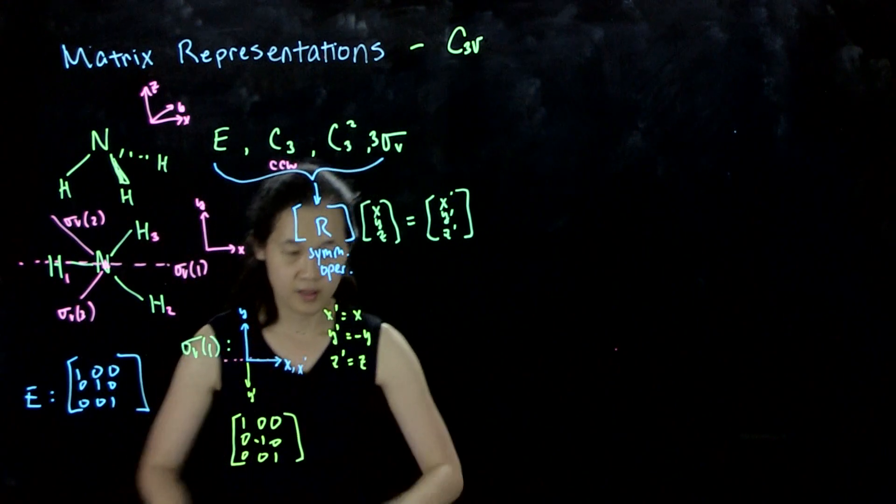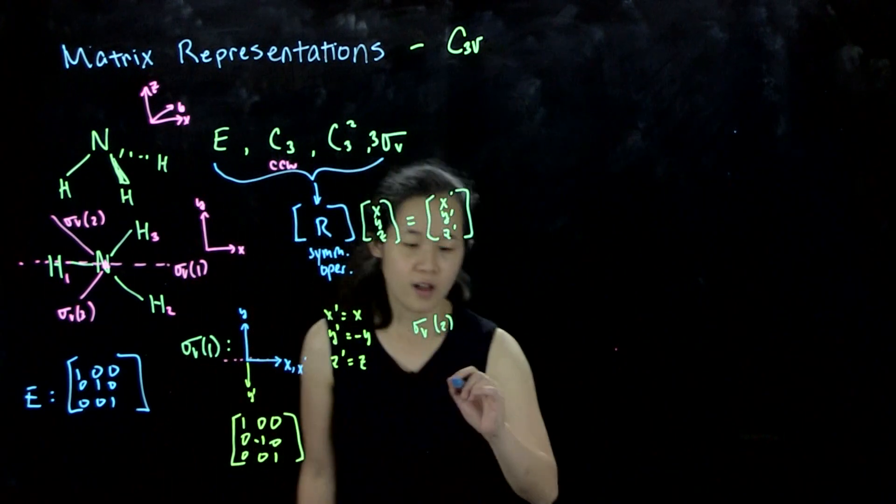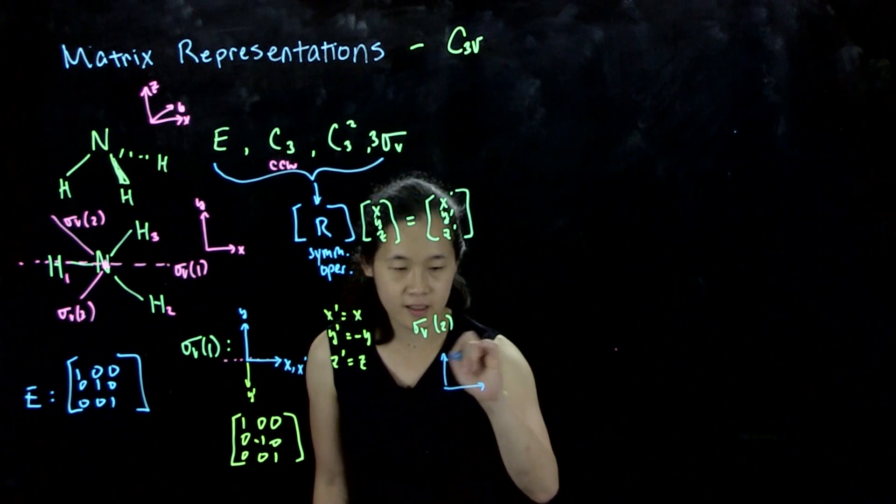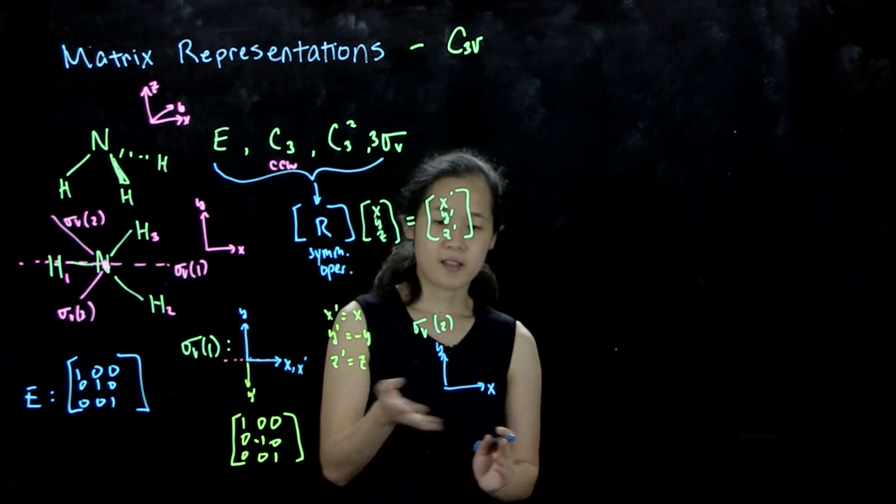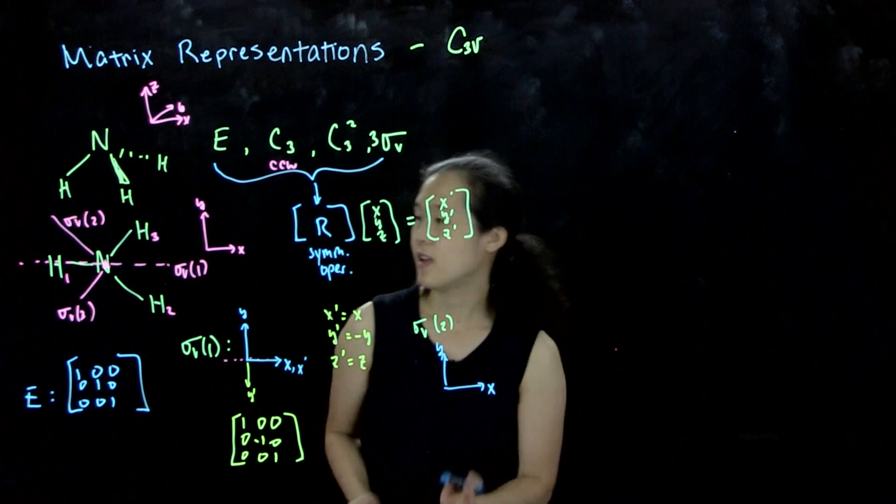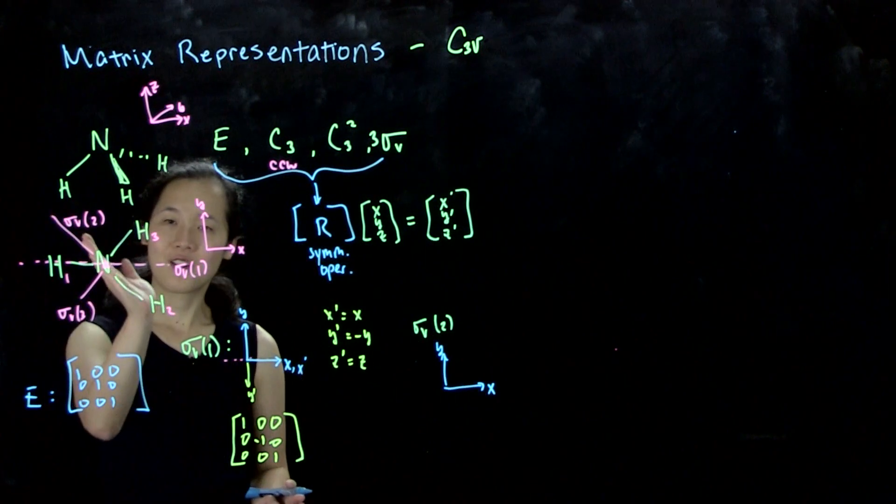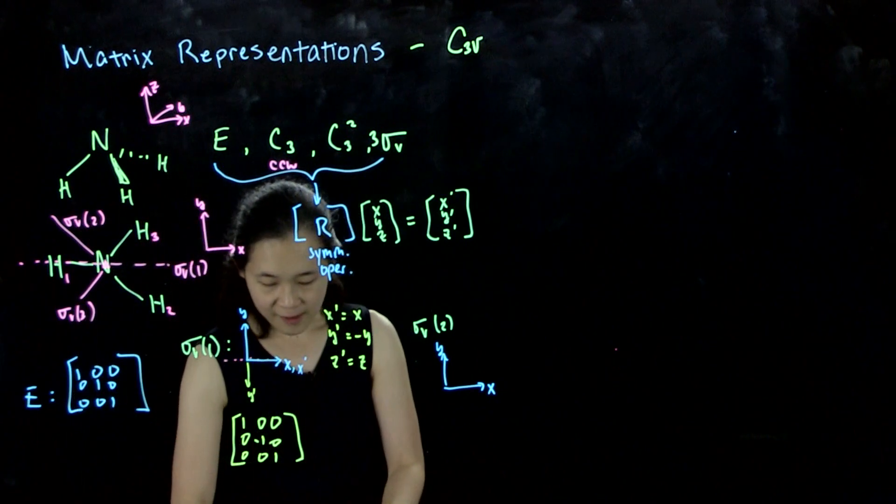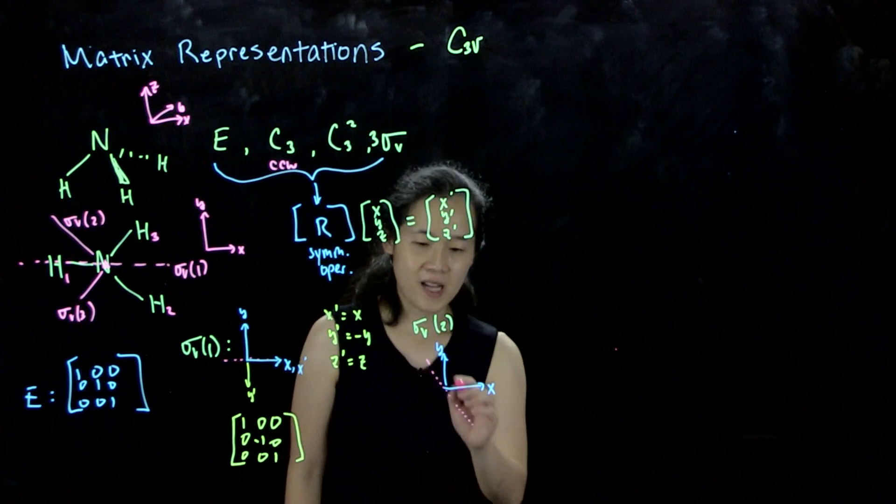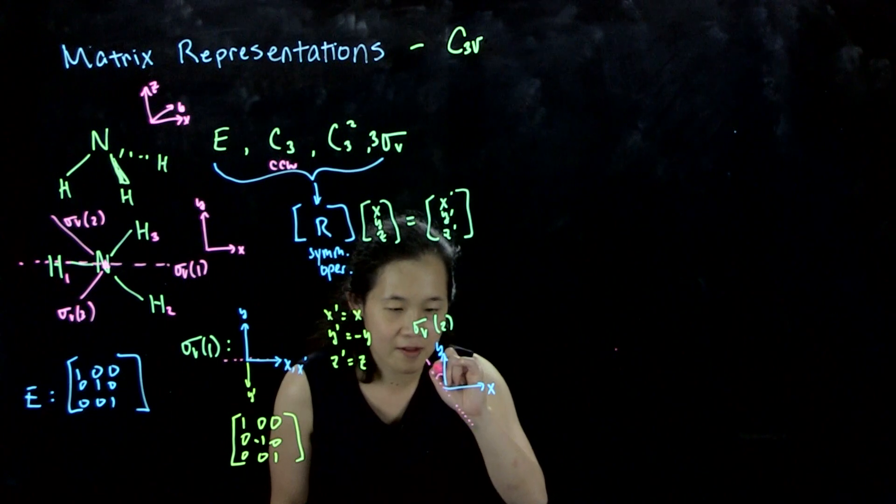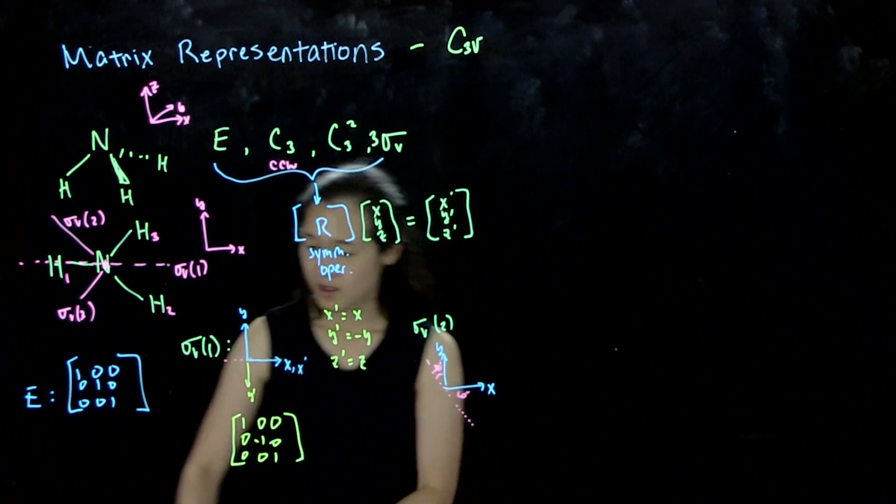For sigma v2, let me draw our x and y vectors. All the sigma v's contain the z-axis so that's why it's easier for me to draw the x and y. Sigma v2 is along this one-third direction. Remember this is 90 degrees, so this has got to be 30 degrees. So time for some trig. 30 degrees and this is 60 degrees. This is our mirrored plane of sigma v2.